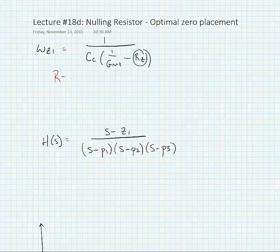So we note that if Rz is less than 1 over gm2, then omega z1 remains in the right half plane and still causes us a problem with phase shift.